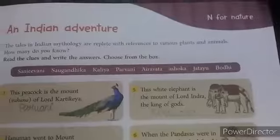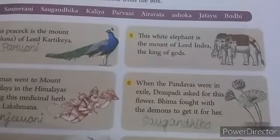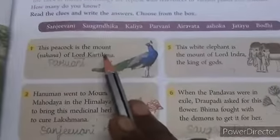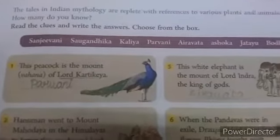You try to solve the puzzle Lungs of the Earth, using the hints given on page number 6. Next is Indian Adventure — here you know about the tales in Indian mythology, to relate them with references to various plants and animals. Read the clues and write the answers, choosing from the box. First one: the Peacock. This peacock is the Vahana (mount) of Lord Kartikeya, whom we usually call Lord Murugan. The peacock's name is Paravani.